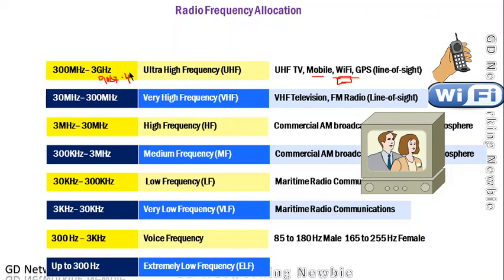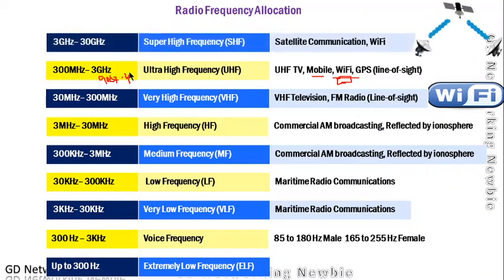Super High Frequency (SHF) ranges from 3 gigahertz to 30 gigahertz and is used for satellite communications. In addition, the Wi-Fi 5 GHz band also falls in this SHF range. So Wi-Fi uses both the UHF band (2.4 GHz) and the SHF band (5 GHz).